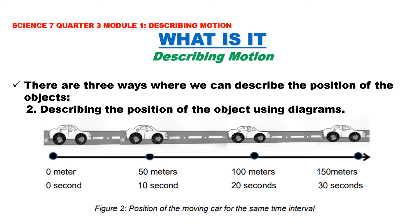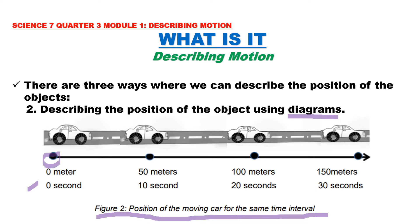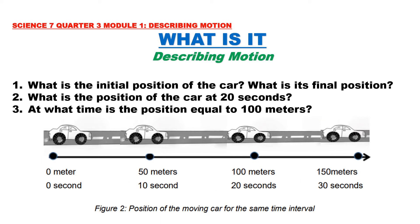Another way to describe position is number two: using diagrams. Figure two shows the position of a moving car at the same time interval. At zero seconds, the car is at zero meters — the starting point. At ten seconds, the car is at 50 meters. At twenty seconds, the car is at 100 meters. And at thirty seconds, the car is at 150 meters. Let us answer the following questions: What is the initial position of the car? What is its final position? What is the position of the car at twenty seconds? And at what time is the position equal to 100 meters?